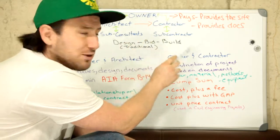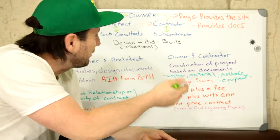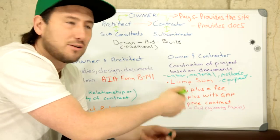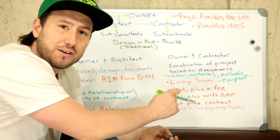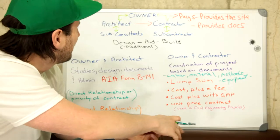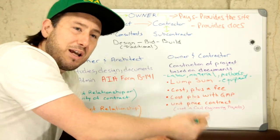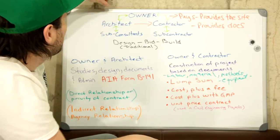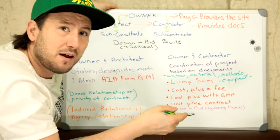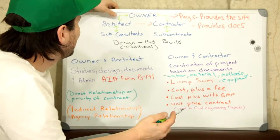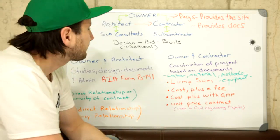The owner isn't responsible for directly paying for equipment and labor — that is the responsibility of the contractor. The contractor will put in what's called progress payments, the architect will confirm that the work has been done, and the owner will issue payment.